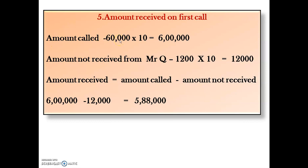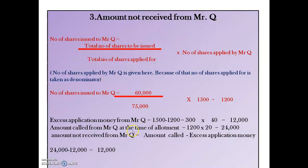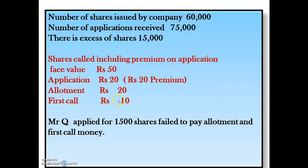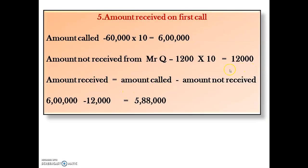Amount received on first call: Amount called = 60,000 × ₹10 = ₹6 lakh. Amount not received from Mr. Q on first call: 1,200 × ₹10 = ₹12,000. Amount received on first call = ₹6,00,000 − ₹12,000 = ₹5,88,000. You can directly use ₹12,000 from the earlier calculation, or recalculate as 1,200 shares × ₹10 per share = ₹12,000.